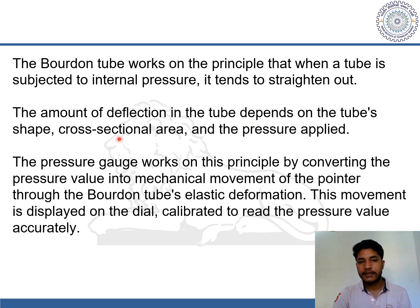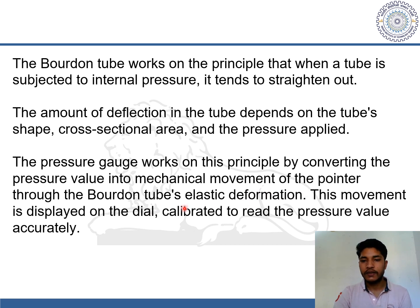The amount of deflection in the tube depends on the tube's shape, cross-sectional area, and the pressure applied. The pressure gauge works on this principle by converting the pressure value into mechanical movement of the pointer through the Bourdon tube's elastic deformation. This movement is displayed on the dial, calibrated to read the pressure value accurately.